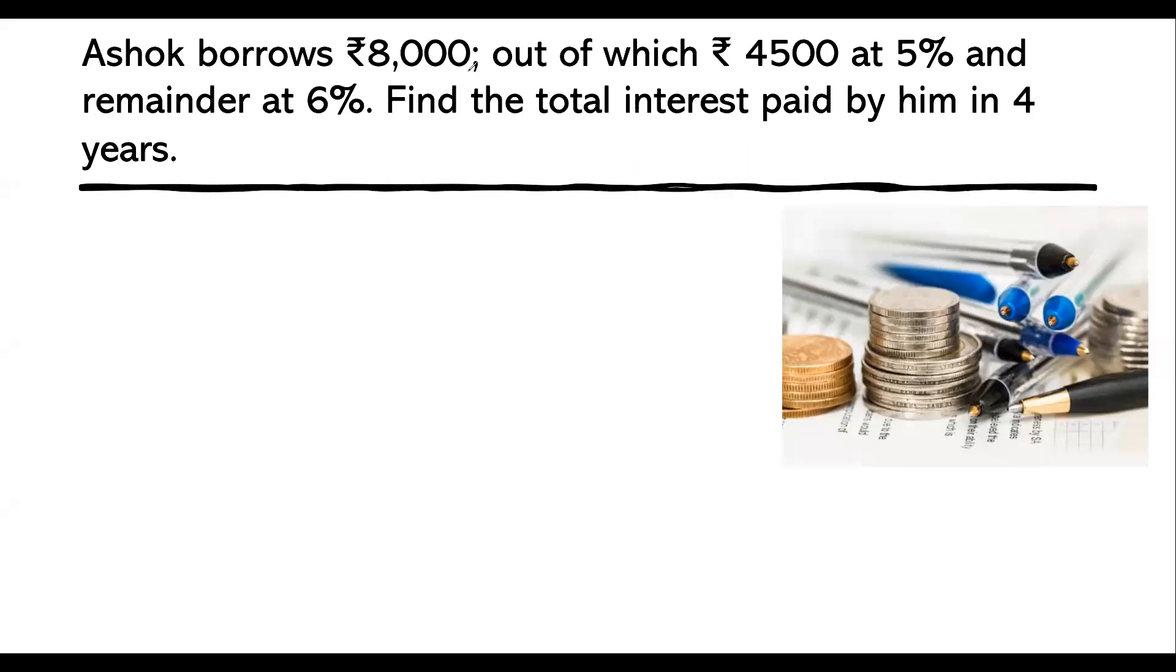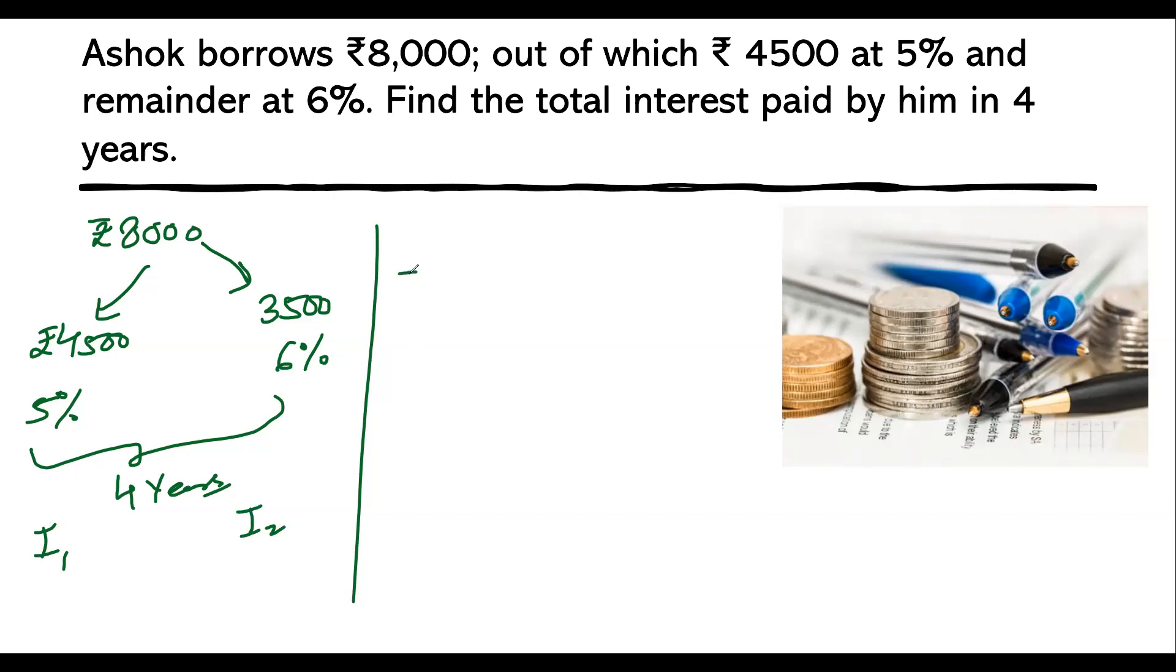Let's read it out. It says Ashok borrows rupees 8,000. Out of those 8,000 rupees he invested 4,500 at 5% interest, 5% simple interest. And the remainder, which means 3,500 rupees, he is investing at 6% simple interest. Find the total interest paid by him in 4 years. For 4 years we need to calculate. We basically need to find I1 and I2 and add them up. That's how we find the simple interest.